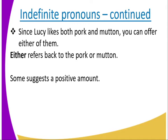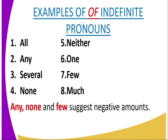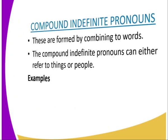Another example: 'Since Lucy likes both pork and mutton, you can offer either of them.' Here 'either' refers back to the pork or mutton, and the 'of' phrase is included. Some pronouns suggest a positive amount — these include: all, any, several, none, neither, one, few, and much. Whereas any, none, and few suggest negative amounts.